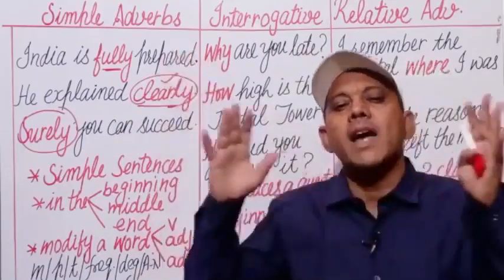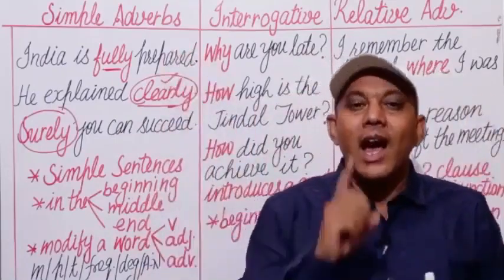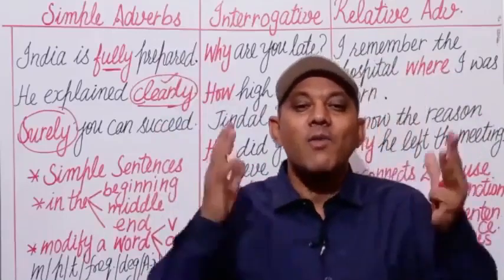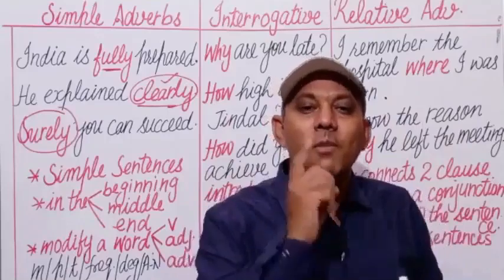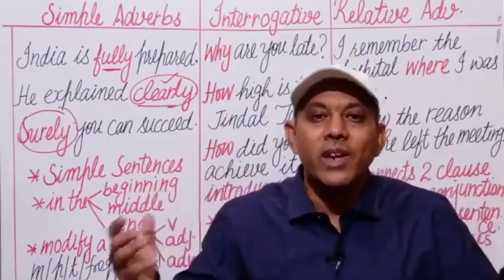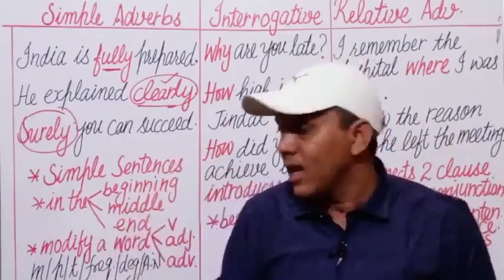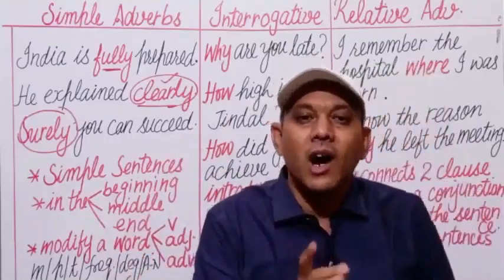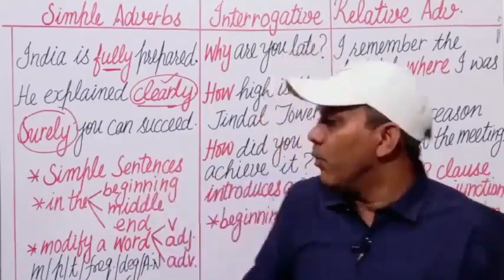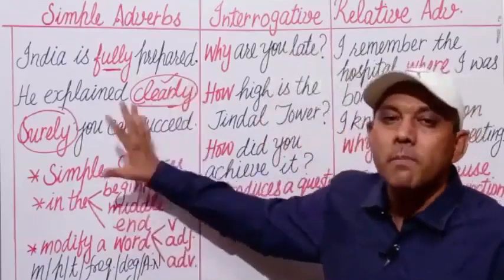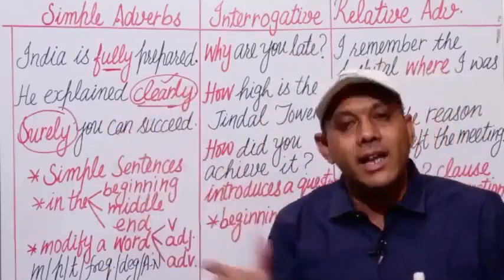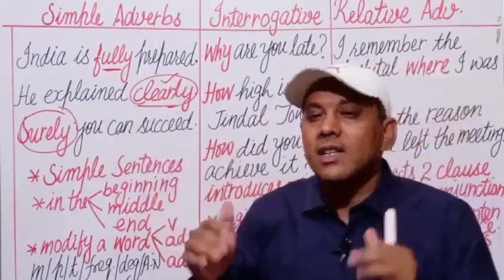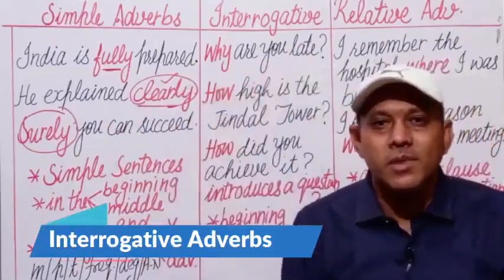Simple adverbs are of many types: adverb of manner, adverb of place, adverb of time, adverb of degree, adverb of frequency, or adverb of affirmation or negation. We shall discuss the types of simple adverbs in detail later. Now let us discuss interrogative adverbs.